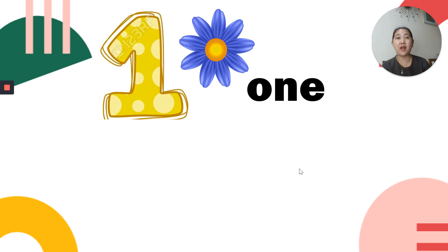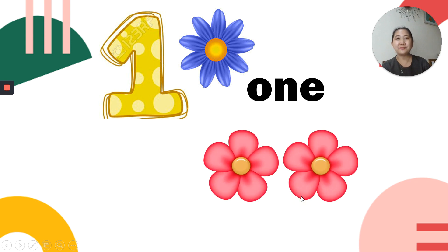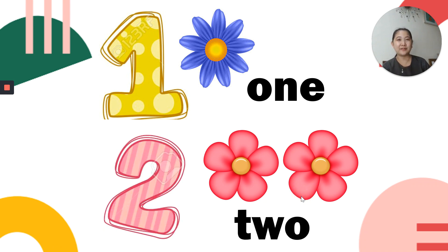Now, count the next flowers. Can you count with me? 1, 2. There are 2 red flowers. That's the symbol. Very good.